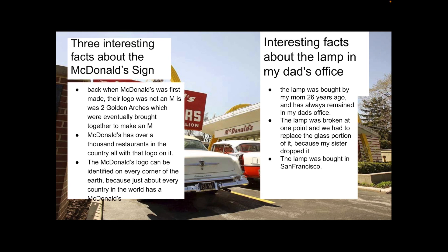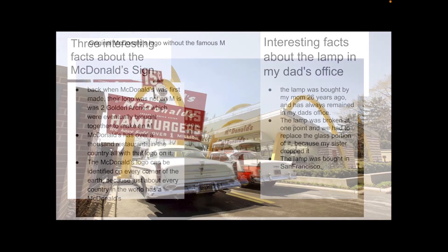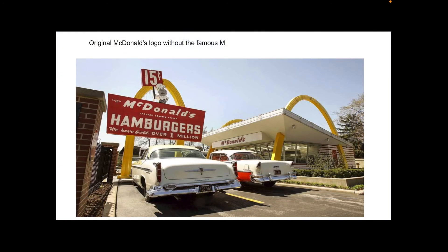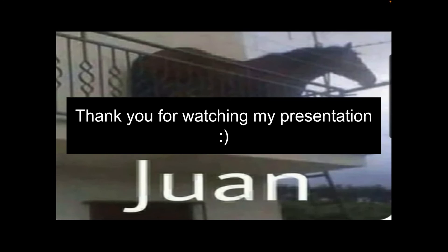Some interesting facts about the office lamp: my mom bought it for my dad to put in his office about 26 years ago. The lamp was broken at one point, and we had to replace the glass part, and it was bought in San Francisco. Here is the original McDonald's with the two arches instead of the M as its logo. And thanks for watching my presentation.